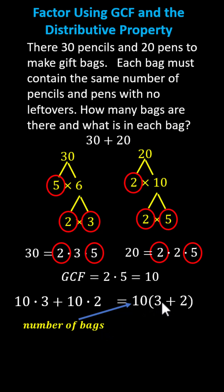The 3, which came from the factor of 30, indicates how many pencils are in each gift bag. And the 2, which came from the factor of 20, indicates the number of pens in each bag. So there's a total of 10 gift bags, where each gift bag contains 3 pencils and 2 pens. I hope you found this helpful.